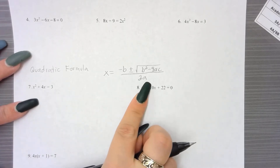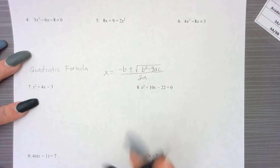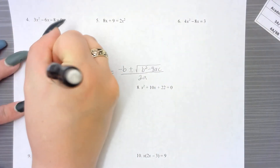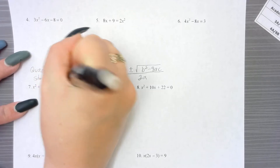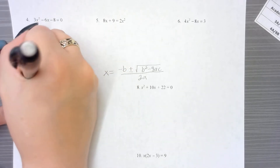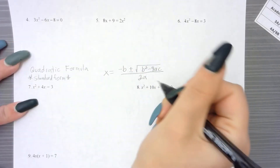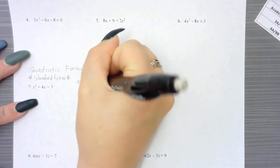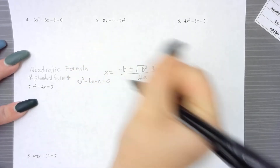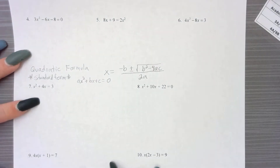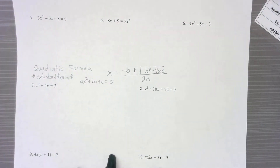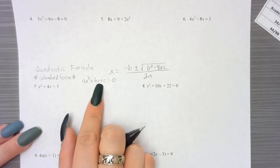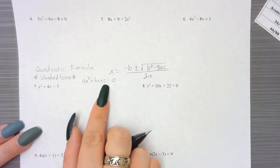In order to use the quadratic formula, the equation has to be in standard form. That standard form is ax squared plus bx plus c equals 0 — or the equals zero could be on the other side. A is the number in front of your x squared term, b is the number in front of your x term, and c is your constant.